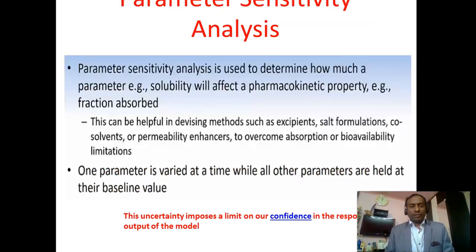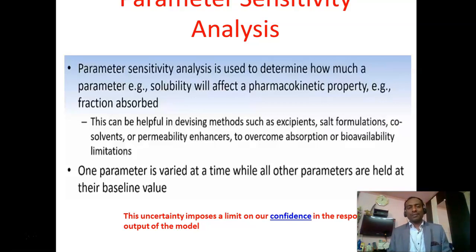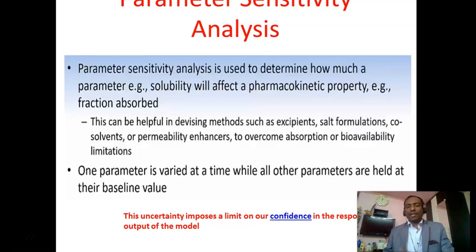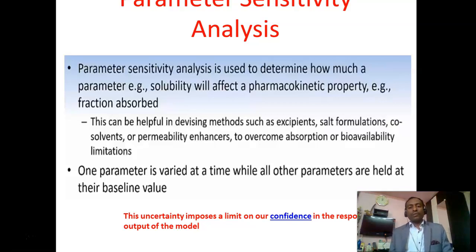What is parameter sensitivity analysis? We can also predict the effect of solubility on pharmacokinetic properties. As per the BCS classification, we have four classes — BCS1, BCS2, BCS3, BCS4 — based on solubility and permeability. BCS class 1 is highly soluble and highly permeable, which is considered the ideal class for making any decision. This can be helpful in devising methods such as excipient selection, salt formulation, co-solvent, and permeability enhancers to overcome absorption and bioavailability limitations. One parameter is varied at one time while all other parameters are held at their baseline values, and these uncertainties impose limits of confidence on the output models.